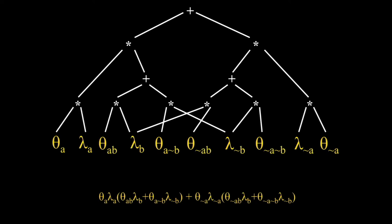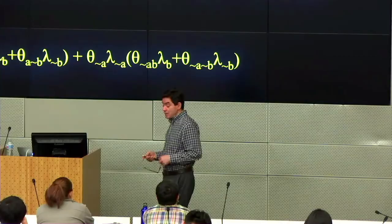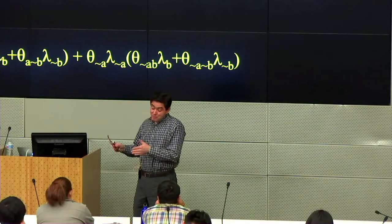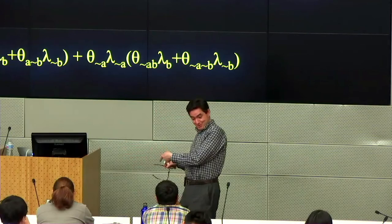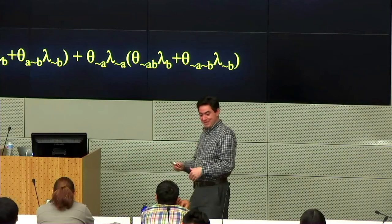There are variations you can find in the book where you can make this better than vanilla variable elimination, but we're not going to do that. I want to do one more thing on the relation with joint trees to close this theoretical connection, and then move to the last part, which will be short.